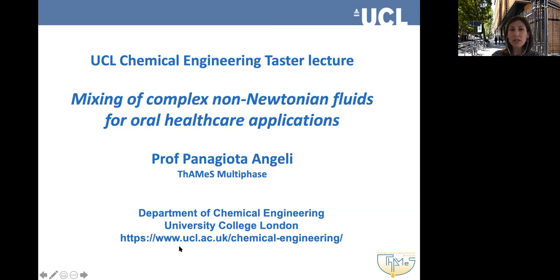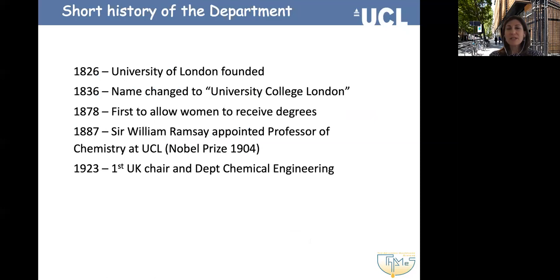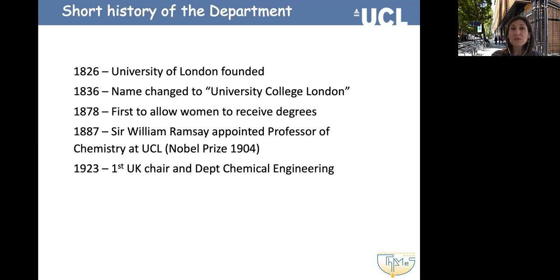For more information about our department and the research going on, you can follow the link here. UCL was founded as University of London in 1826 and the name changed to University College London in 1836. UCL was actually the first to allow women to receive degrees, and that happened in 1878. It is closely associated with Sir William Ramsay, who won a Nobel Prize in 1904 for discovering the inert gases. In his honor, the first UK chair of chemical engineering and the first department of chemical engineering were established in 1923.